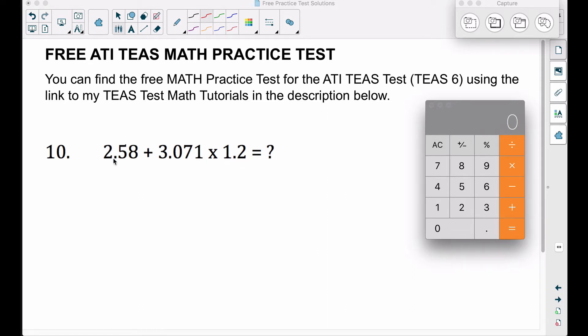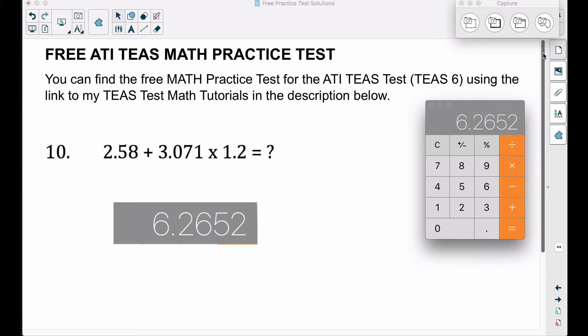Taking 3.071 and multiplying that by 1.2, because we multiply before we add and subtract, we get this. Now we can add on the 2.58, which gives us an answer of 6.2652.